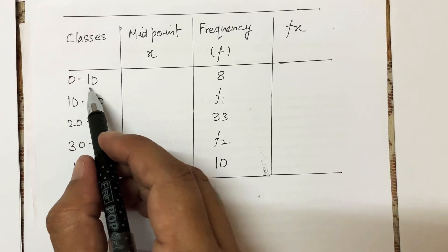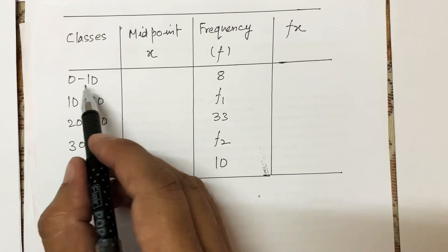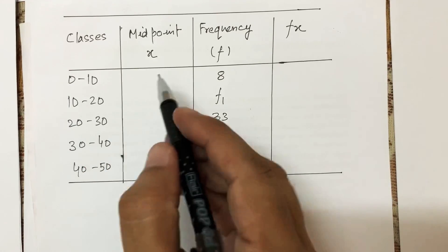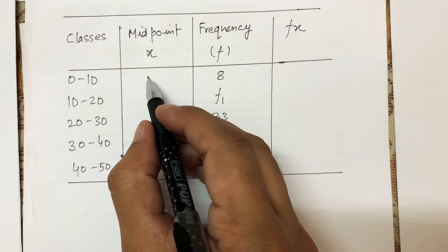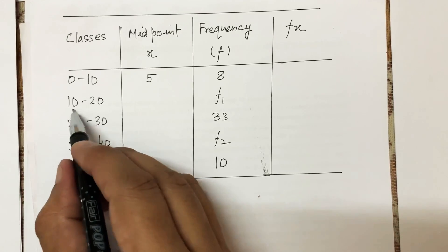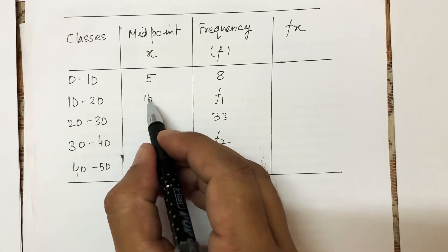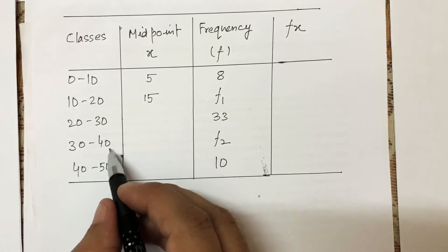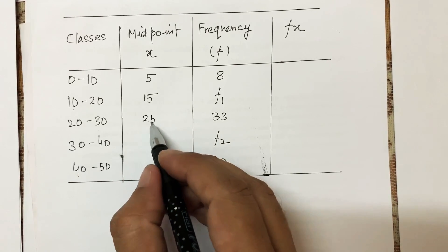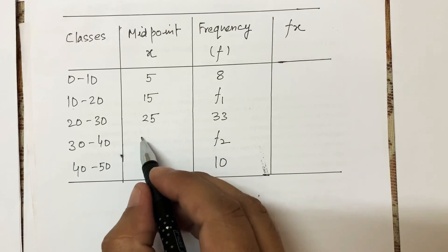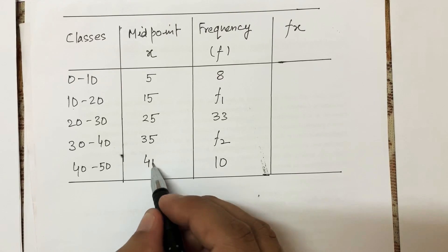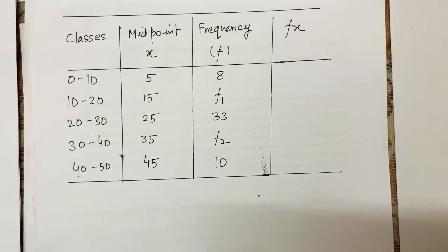The midpoint is calculated as the upper limit plus lower limit divided by 2. So: 0+10/2 = 5, then 10+20/2 = 15, 20+30/2 = 25, 30+40/2 = 35, and 40+50/2 = 45. All midpoints are now calculated.